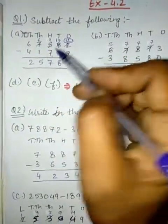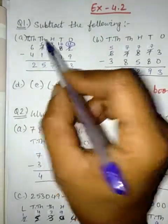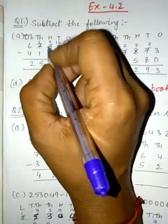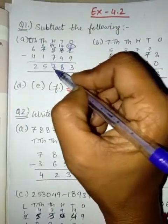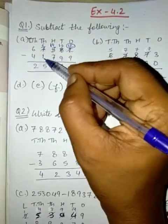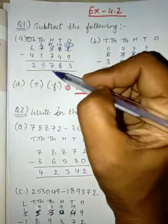Now 4 is less than 7, so we will borrow 1 from here and 7 will become 6. So this 4 will become 14. 14 minus 7 is 7. 6 minus 1 is 5. So 6 minus 4 is 2. This is the answer.